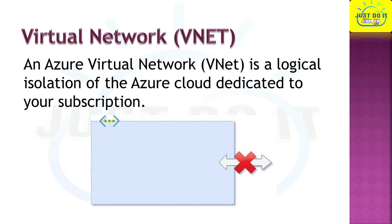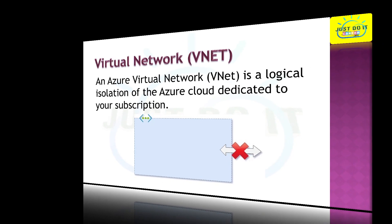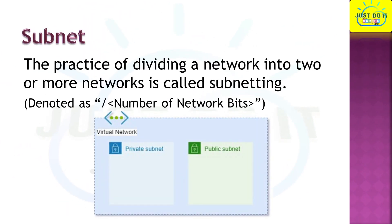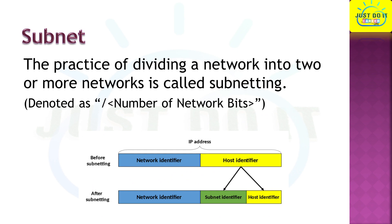A subnet is also called a subnetwork — we divide a virtual network into different parts called subnets. The logical subdivision of an IP network is called a subnet, and the practice of dividing a network into two or more networks is called subnetting. Computers belonging to a subnet are addressed with an identical most-significant bit group in their IP address. Today I'm going to show you how this division takes place in the IP addressing part.